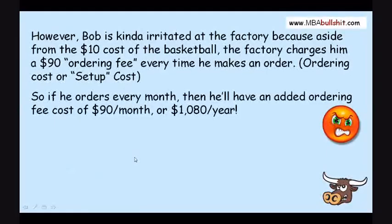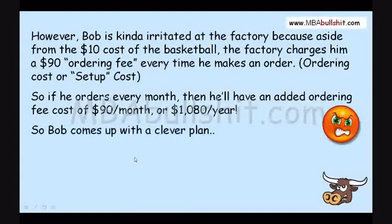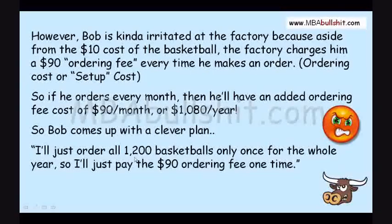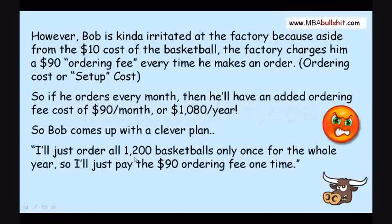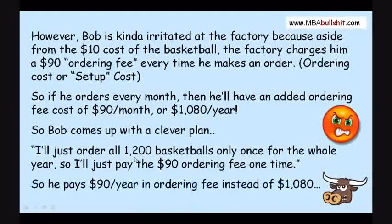So if Bob orders every month, then he'll have an added ordering fee cost of $90 a month or $1080 a year. So Bob comes up with a clever plan. I'll just order all 1,200 basketballs only once for the whole year, so I'll just pay the $90 ordering fee one time. He decides to pay $90 a year ordering fee instead of $1080.